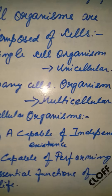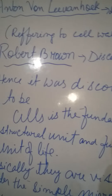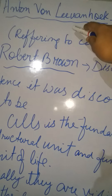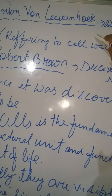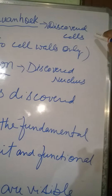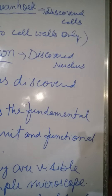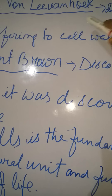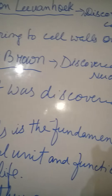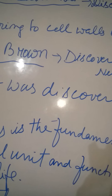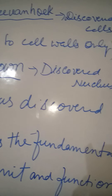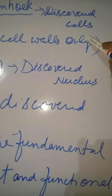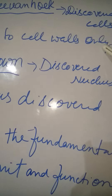Now looking at the detailed structure of the cell: Anton von Leeuwenhoek is supposed to have been the first person to have discovered the cell. He actually referred to the cell by observing the cork cambium — the outermost bark of a tree, which is dead cell wall — and found a honeycomb-like structure, referring to the cell wall only.